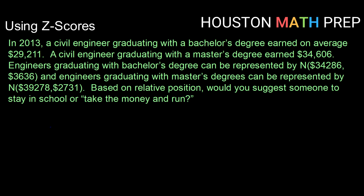In 2013, a civil engineer graduating with a bachelor's degree earned on average $29,211 as a starting salary. A civil engineer graduating with a master's degree earned a starting salary of $34,606. Engineers graduating with bachelor's degrees can be represented by a normal distribution with a mean of $34,286 and a standard deviation of $3,636. And engineers graduating with master's degrees can be represented by a normal distribution with a mean of $39,278 and a standard deviation of $2,731.